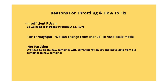The first reason for throttling is insufficient RUs — meaning our database throughput capacity or container capacity is insufficient and we need to increase throughput, that is RU per second. If you have configured manual mode, we may need to update it to autoscale mode. These manual and autoscale modes have been discussed in detail in our earlier videos on throughput.